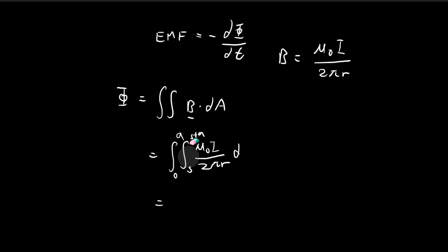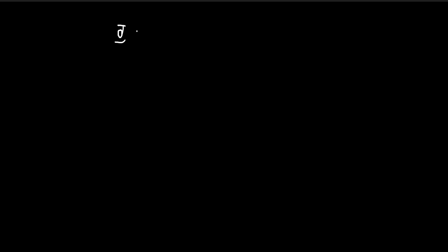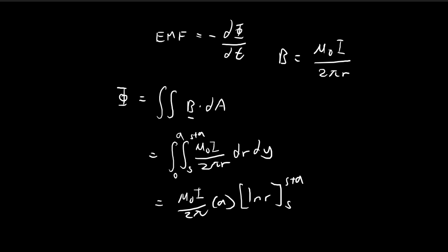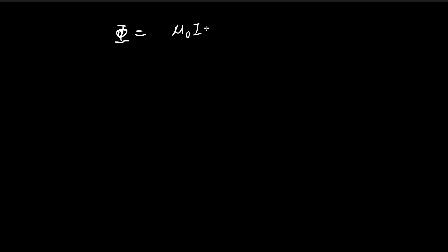And so the bounds of s to s plus a, that should be for dr instead. So I should order it like this. And let's integrate out dy first because there are no y terms inside. So all we get is a. And then integrating with respect to r, we have a 1 over r. So that becomes a natural log of r.